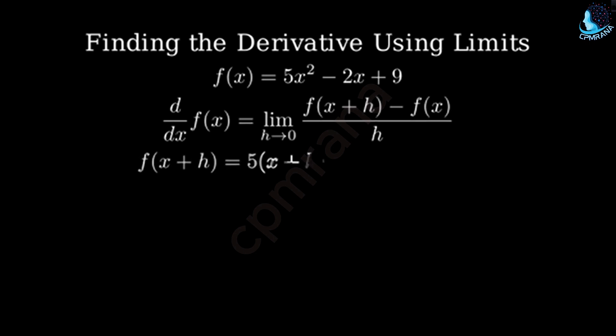We substitute x plus h into our original function wherever we see x. This gives us 5 times quantity x plus h squared minus 2 times quantity x plus h plus 9.